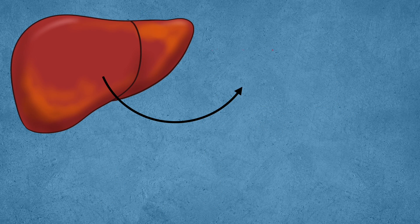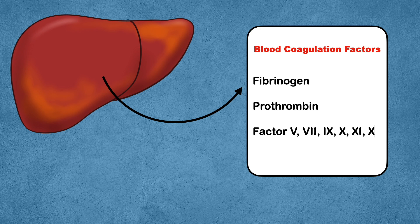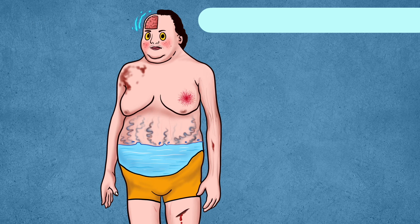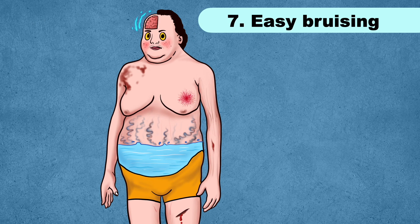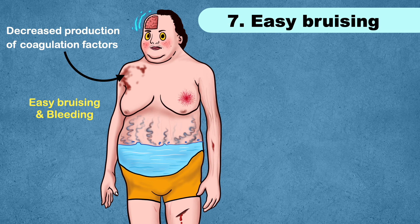The liver cells are involved in the synthesis of most blood coagulation factors, such as fibrinogen, prothrombin, and factors 5, 7, 9, 10, 11, and 12, as well as protein C and S — all of which help in blood clotting. Fatty liver is responsible for decreased production of these coagulation factors, and as a result, you can experience easy bruising or bleeding.